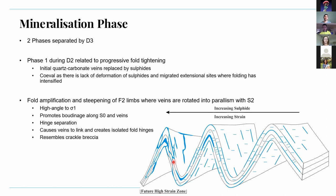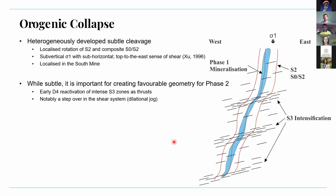Boudinage along the limbs causes veins to link up to form isolated fold hinges, almost resembling a crackle breccia. Sulfide replacement also increases towards what later becomes the shear zone — so tight folds with intermittent sulfide veins created a favorable site for strain partitioning and development of the Dougal River shear zone. D3 is associated with development of a subtle S3 cleavage, which for the most part is fairly spaced except in the south mine, where zones of S3 intensification have occurred.